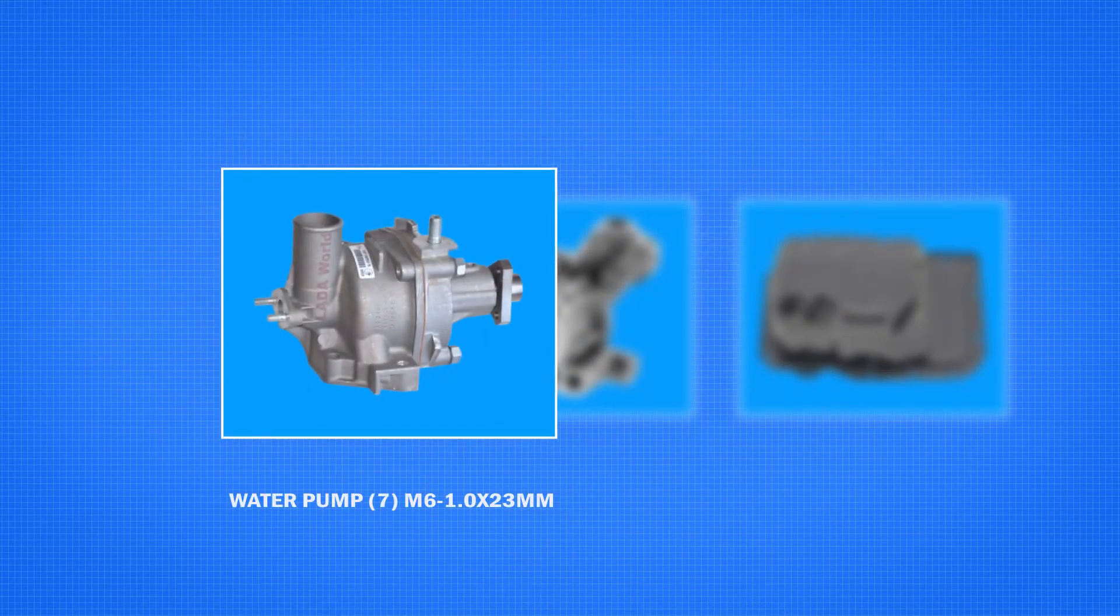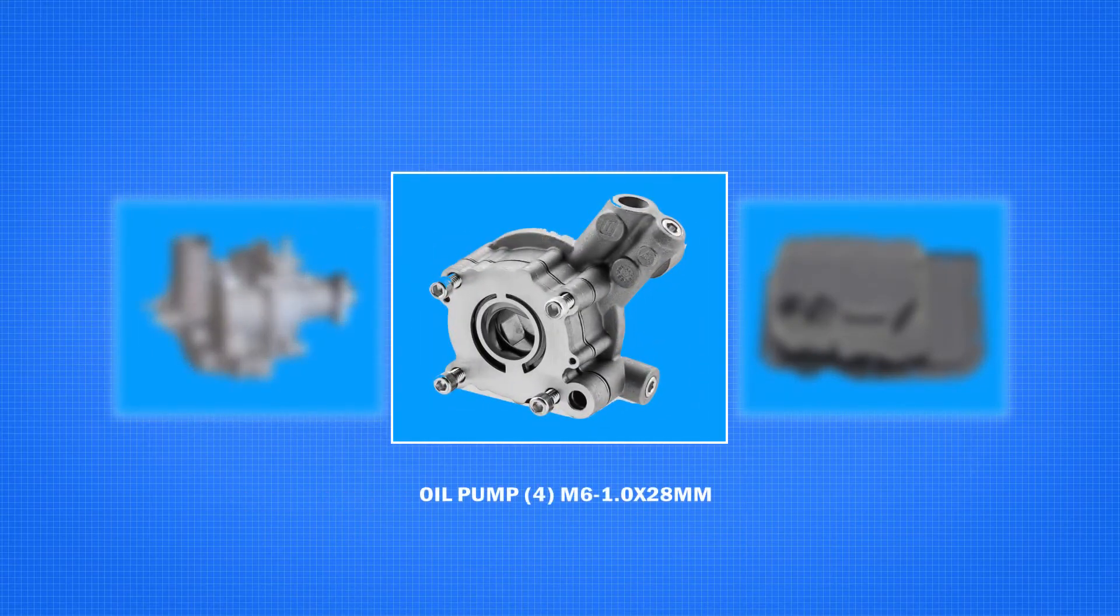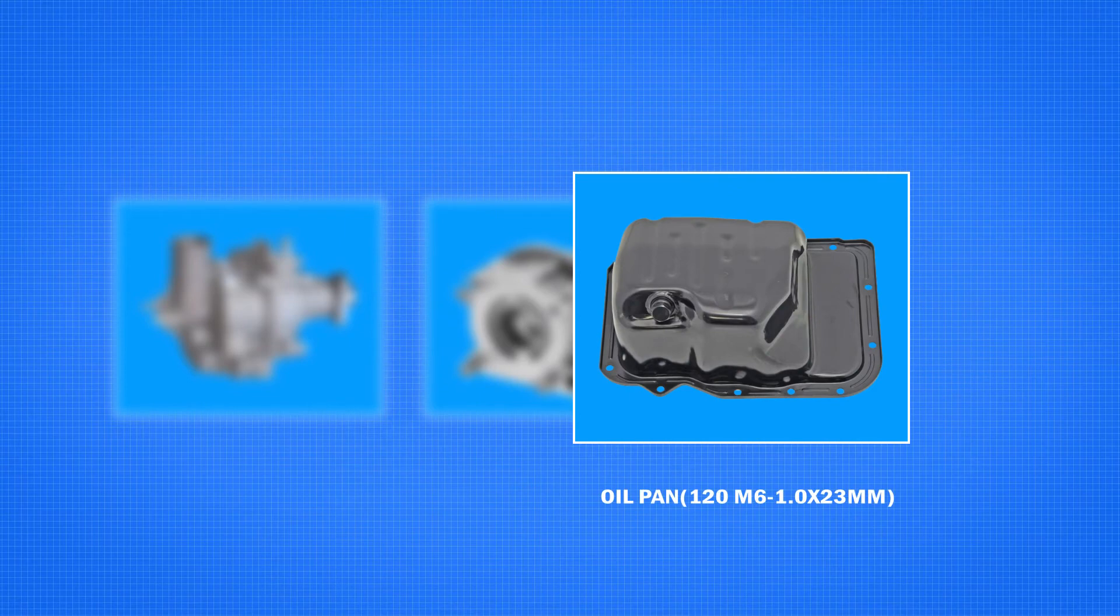The powertrain area has many different components where Taptide products are used. Manufacturers have used Taptide products to assemble components onto the exterior and interior of aluminum engines.